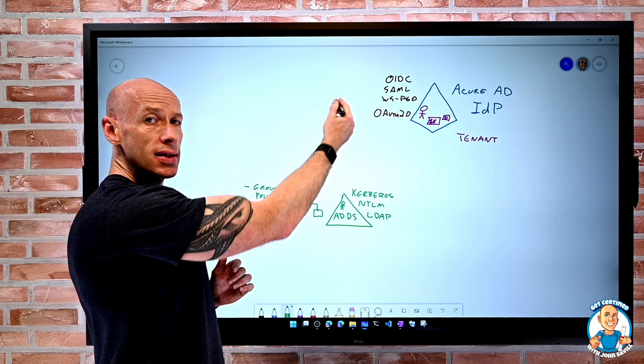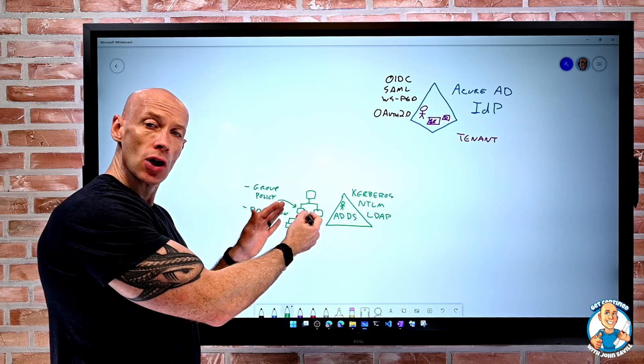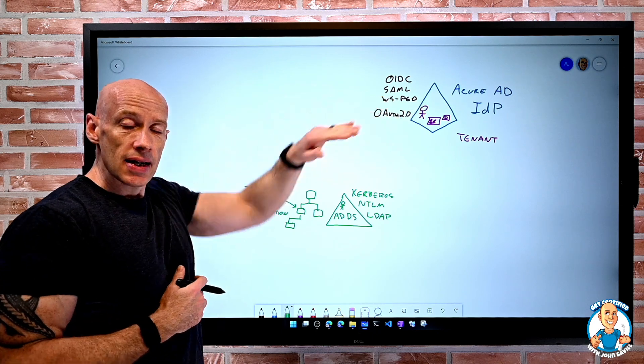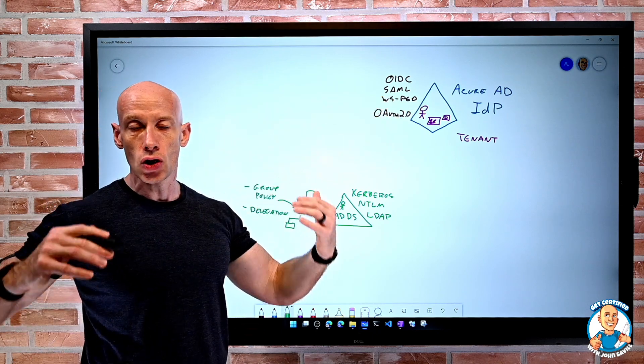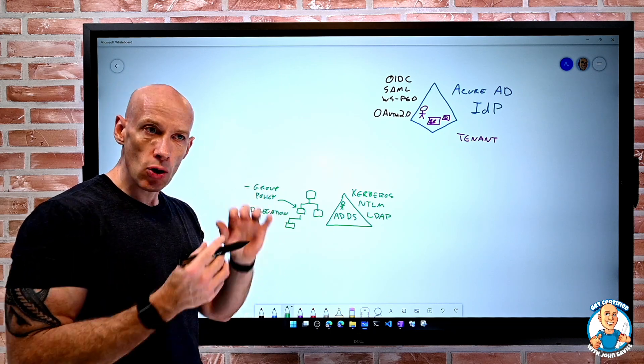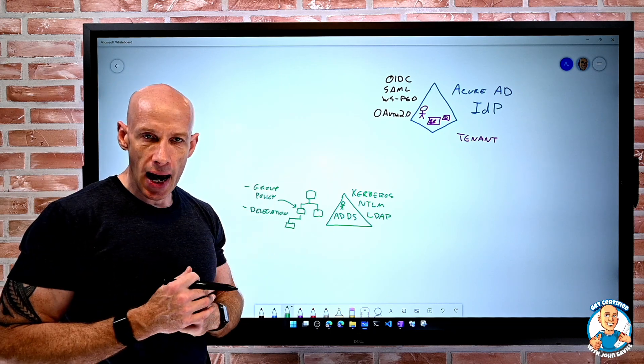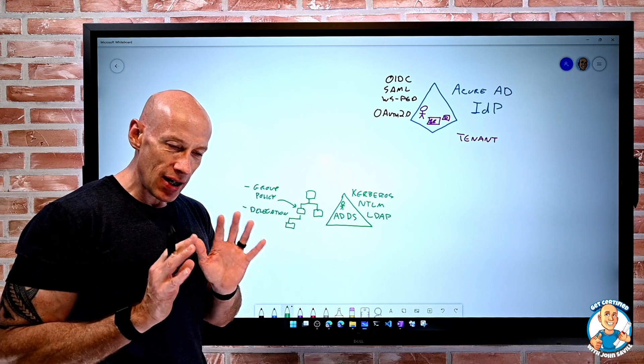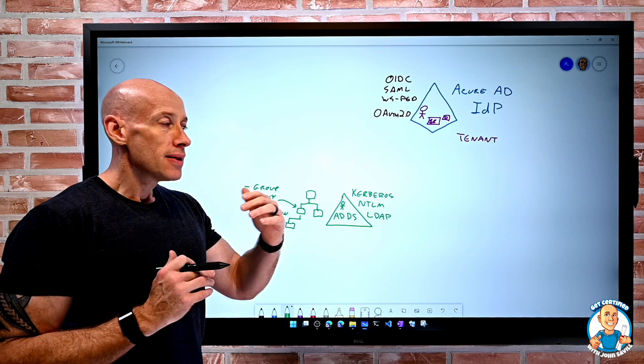This does not exist in Azure AD. There is no concept of a hierarchy. Azure AD is completely flat in terms of users, groups, and device storage. There is no group policy, no native policy in Azure Active Directory. Although it has that term AD in the name, it really is very different.